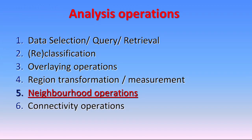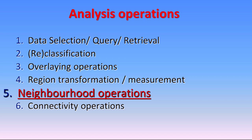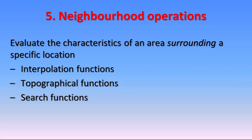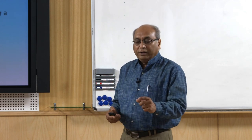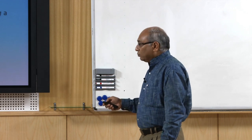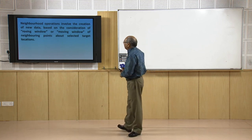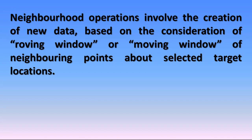The last topic in this lecture is neighborhood operations. Neighborhood operations look at values in the surroundings based on given conditions from the GIS user. They evaluate the characteristics of an area surrounding a specific location; the size of the search area and other parameters depend on user and project requirements. These include interpolation functions, topographic functions, and search functions. Neighborhood operations involve the creation of new data based on a roving window or moving window around selected target locations.